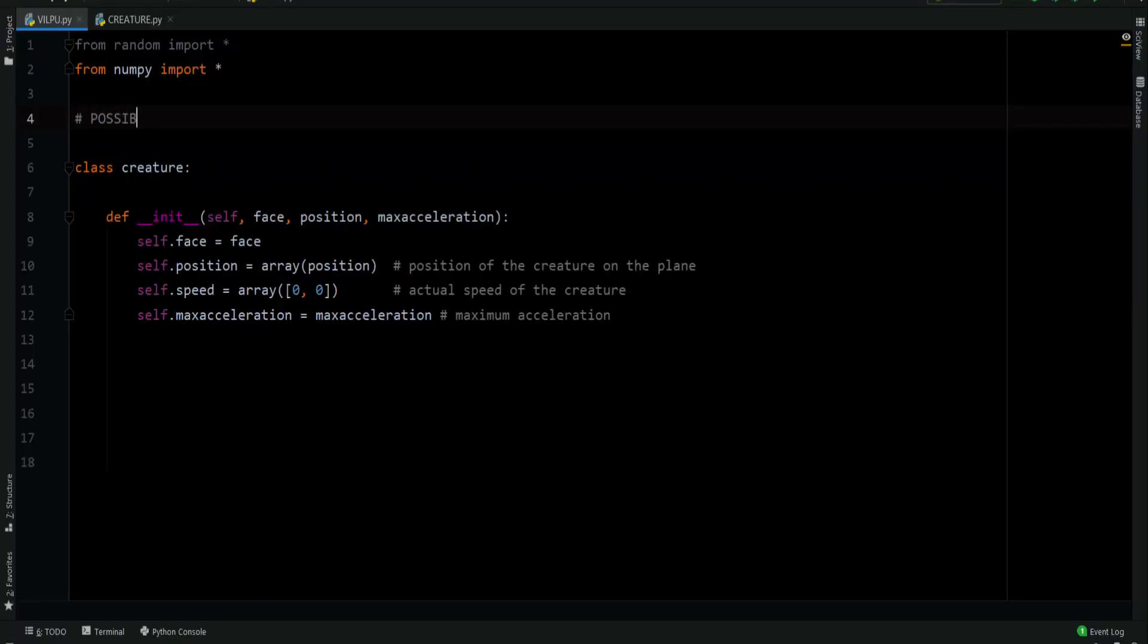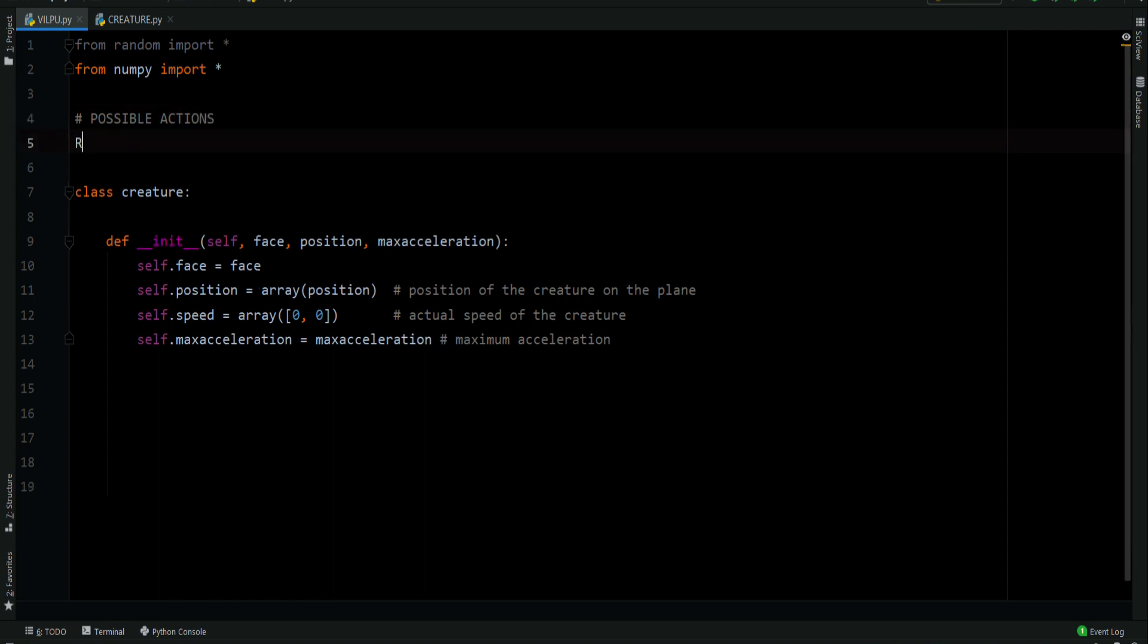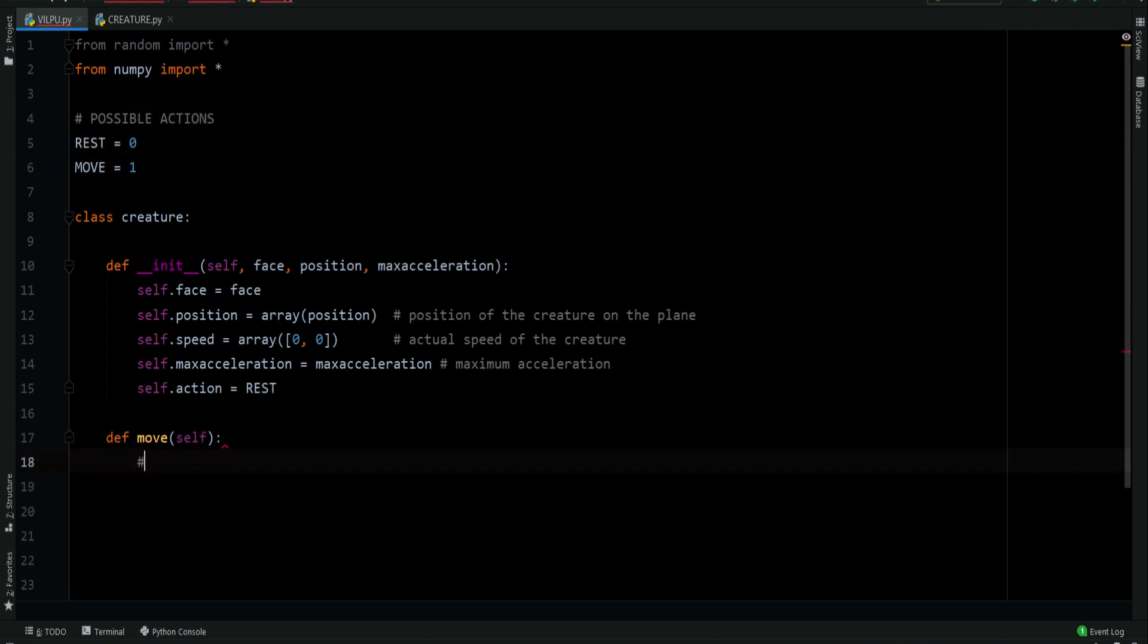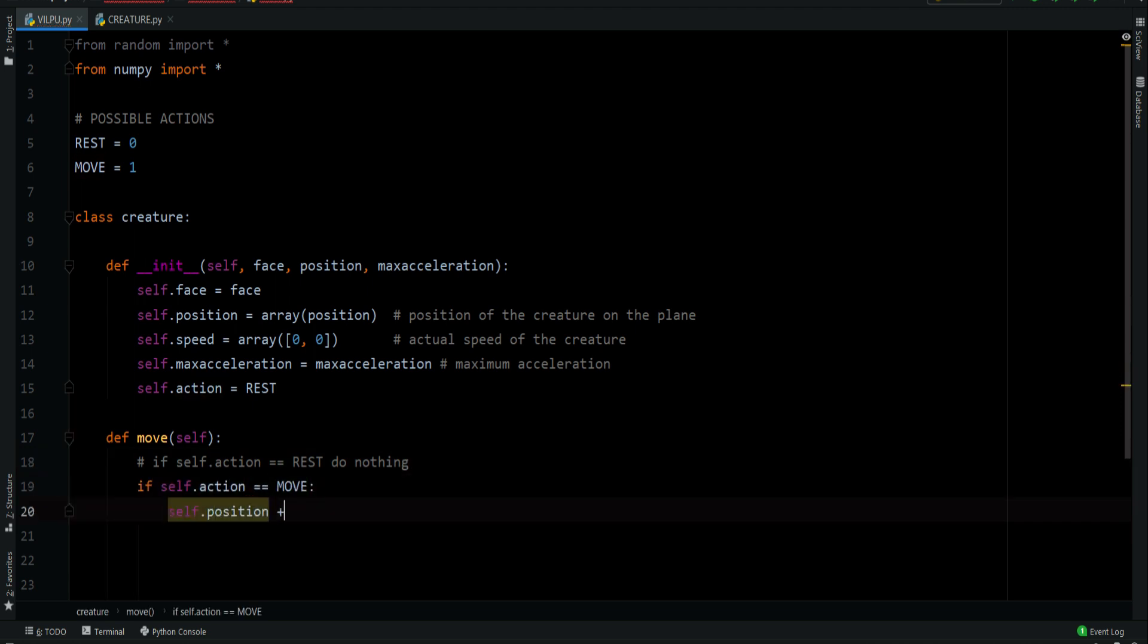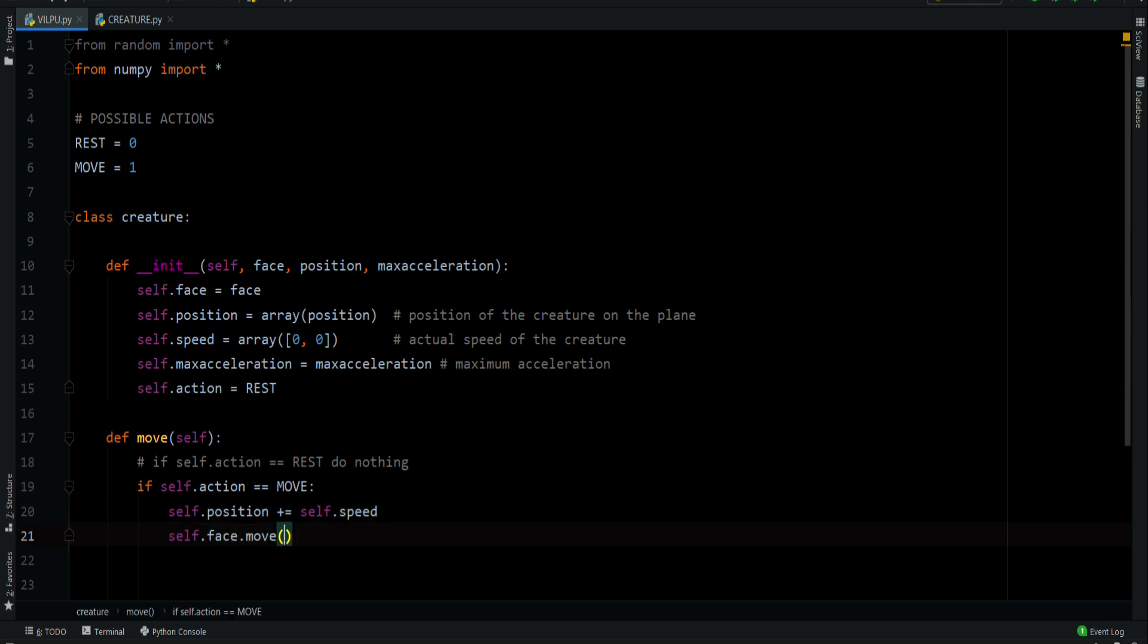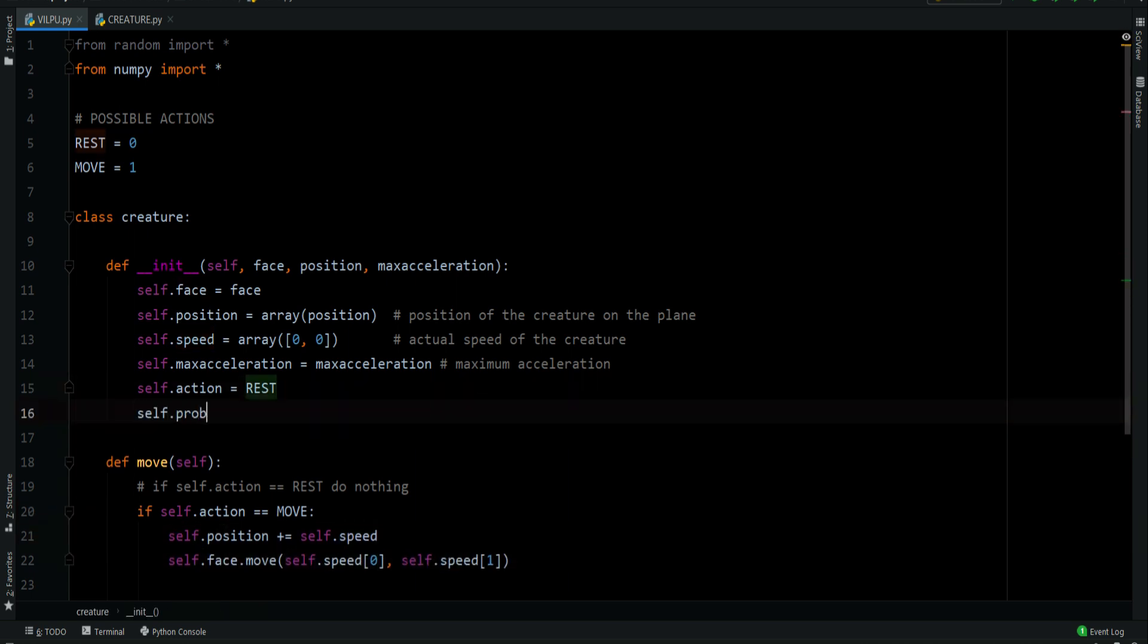Vilpu has two possibilities at a certain time: to take a rest, or to move. When it takes a rest, nothing special happened. But when it's moving, its current position is updated by its current speed. Each time, there is a certain probability to pass from an action to another. This probability is expressed by this matrix.